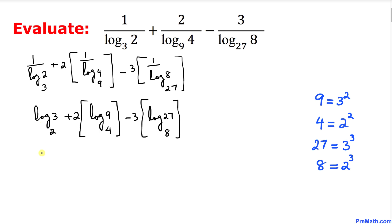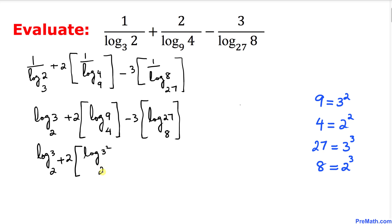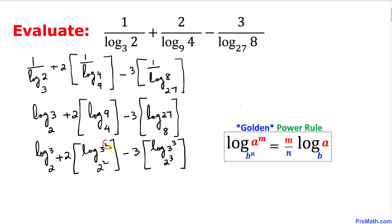Now let's go ahead and further simplify. Let's put this thing log of 3 with a base 2 as it is, plus 2 times, over here this 9 could be written as 3 square and this 4 could be written as 2 square in terms of exponent. So I can write log of 3 square with a base 2 square, and furthermore minus 3 times, here 27 could be written as 3 power 3 and 8 could be written as 2 power 3. Let's go ahead and write it down log of 3 power 3 with a base 2 power 3.